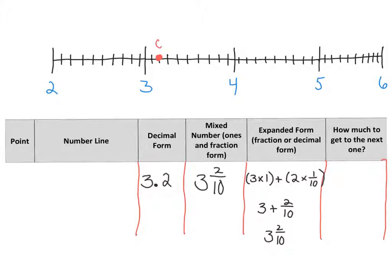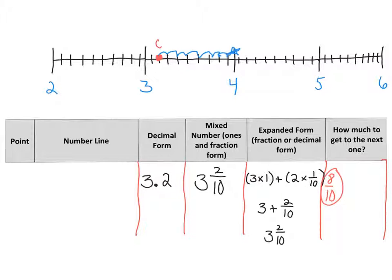Now how much more do we have to go to get to the next whole? We have three and two-tenths. How much more do we need to add to get to the next ten-tenths? We would need to add eight-tenths to get to four.